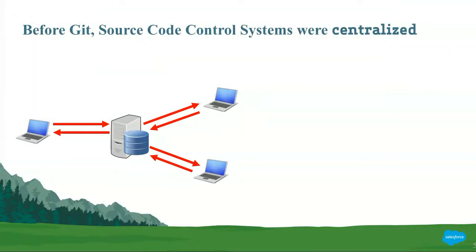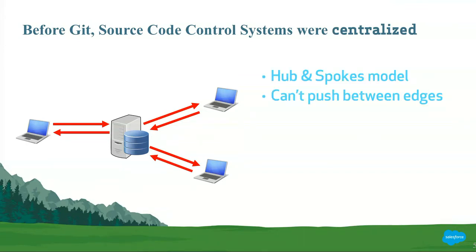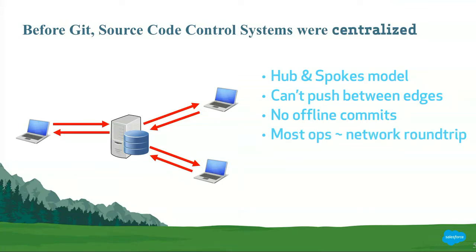Before Git, source code control systems were centralized — basically a hub and spokes model where you couldn't push between the edges; everything had to go through a central server. And if you weren't online, it meant you were out of luck because you couldn't commit your code. And since most operations required a network round trip, if your network was congested or had high latency, you might have poor performance.